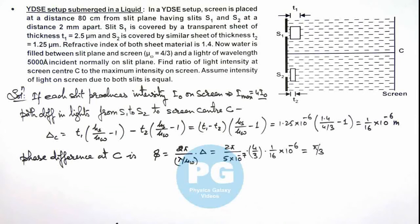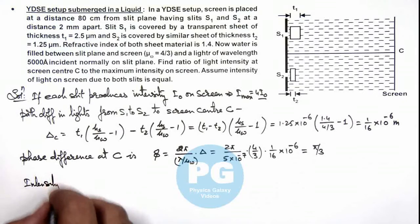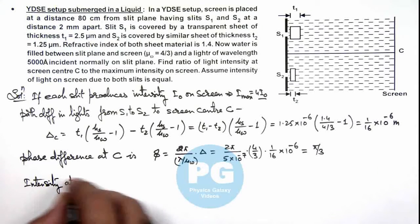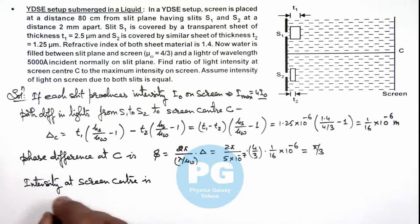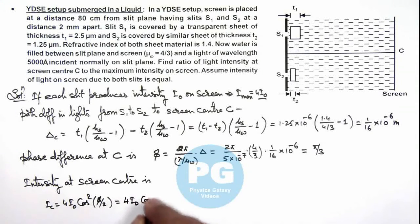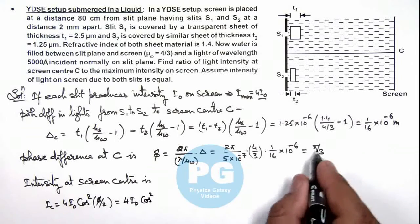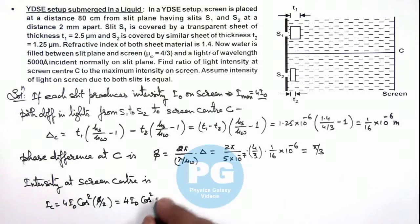So as we have got the phase difference, we can calculate the intensity at screen center. Intensity at screen center we can write 4I₀cos²(φ/2). If we substitute the values, this is 4I₀cos², and the phase difference between the two waves arriving at C is π/3, so this will be cos²(π/6).